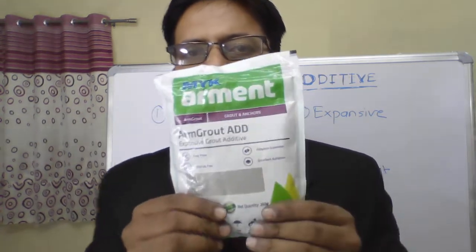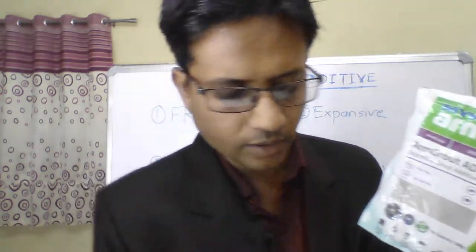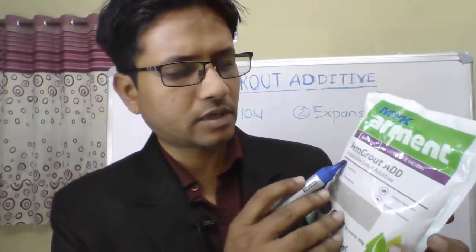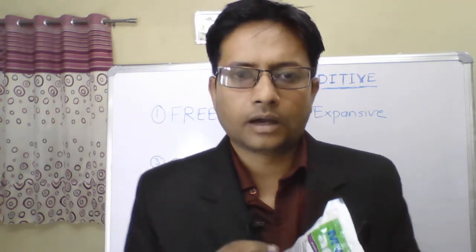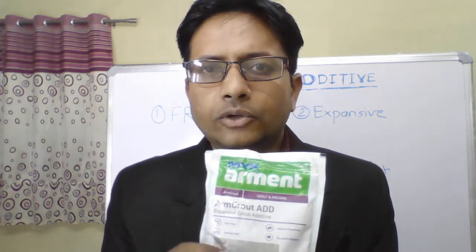So this is the product — this is the chemical we use for pressure grouting, for injection grouting. You can see it's written over here in its short description: it's an expansive grout additive. Expansive grout additive means there is a slight expansion that happens when it is added to cement during the setting process, which actually gives a sealing property inside the joints, construction joints, or honeycomb areas.